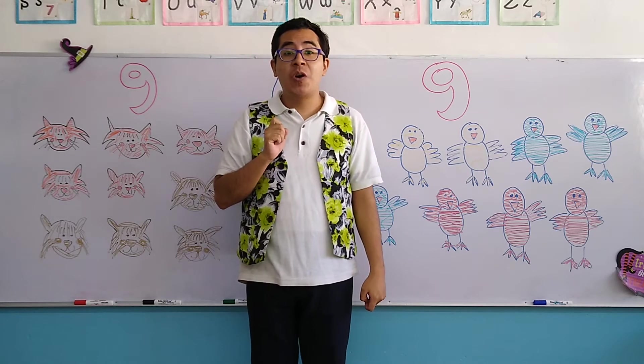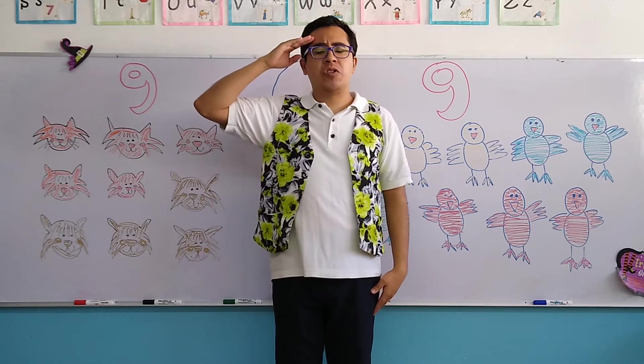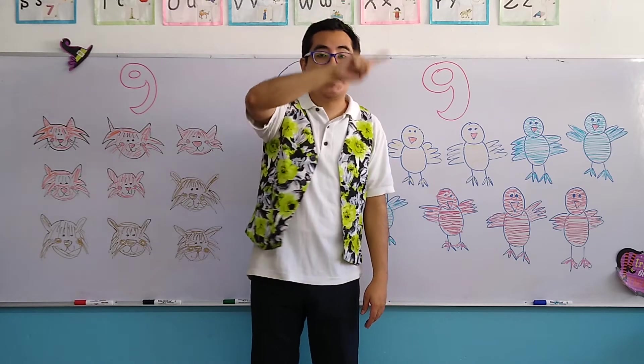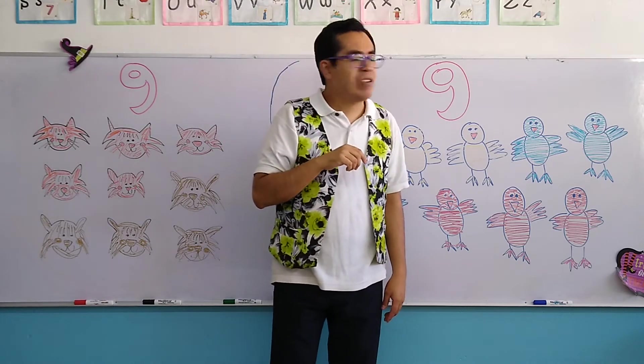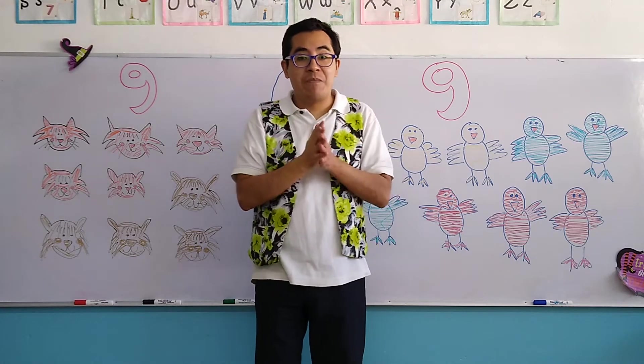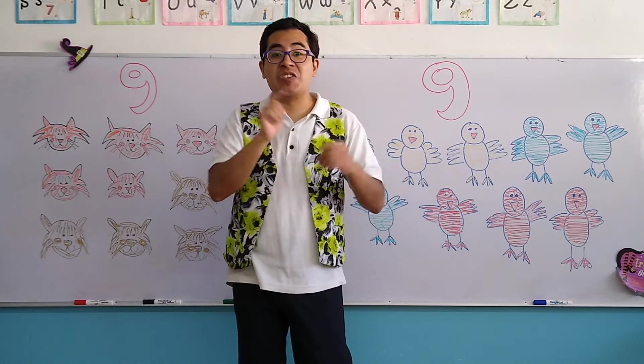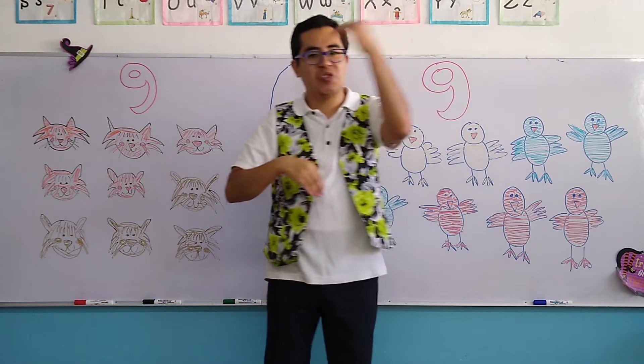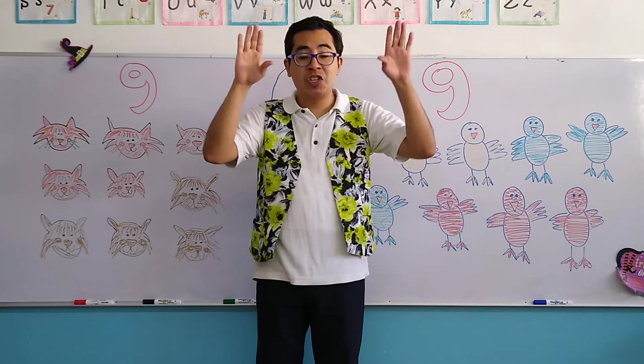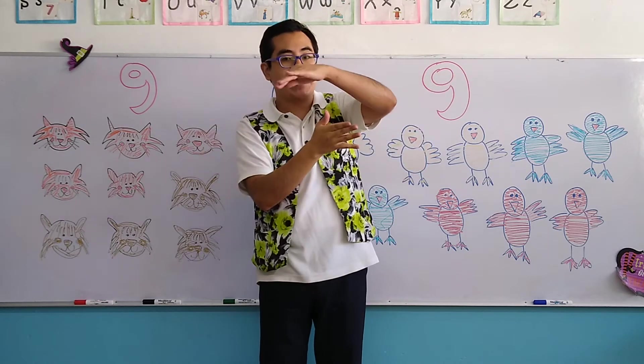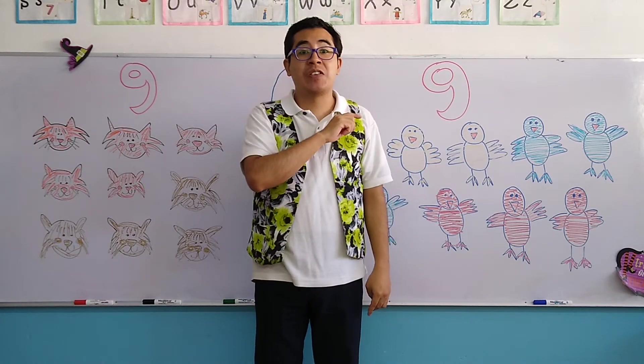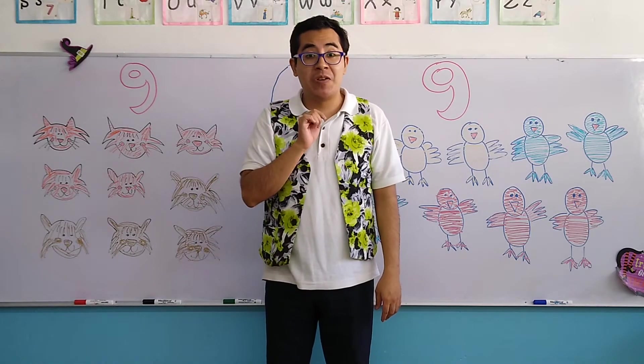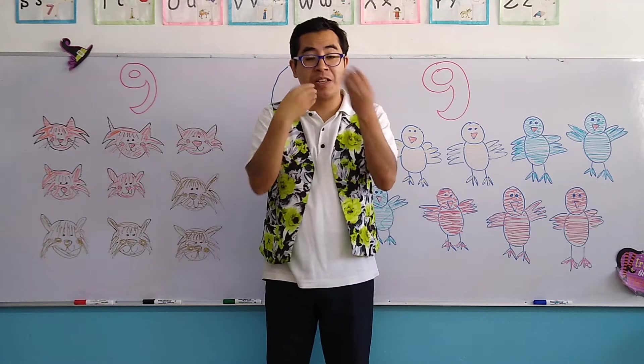The first number that we saw is number 1 which is the soldier. Number 2 is the duck, quack quack. Number 3 is another animal, the snake. Number 4 is a chair but upside down. Remember a chair is an object that we use to sit down. Number 5 is a number that likes to eat a lot.